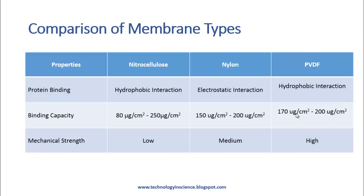This is the comparison of the three different membrane types: nitrocellulose, nylon, and PVDF. As discussed, the protein binding mechanism in nitrocellulose and PVDF is by hydrophobic interaction, whereas in nylon it is electrostatic interaction. The protein binding capacity also varies between these three membranes. Compared in terms of mechanical strength, PVDF has the highest mechanical strength, and the process of staining is also very easy with PVDF.